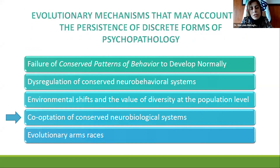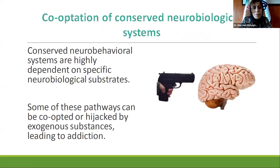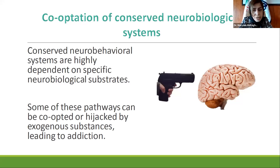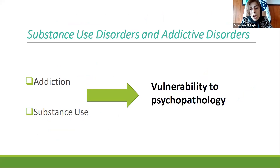The fourth mechanism is co-optation of conserved neurobiological systems. Our neurobehavioral systems are dependent on specific neurobiological substrates and are critical for every function of our body and brain. Some exogenous substances lead to addiction by hijacking these pathways. Addiction and substance use disorder provide a compelling example of how our evolutionary history has left us vulnerable to certain forms of psychopathology.